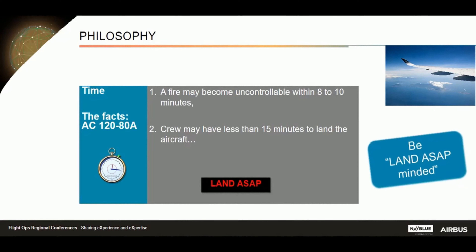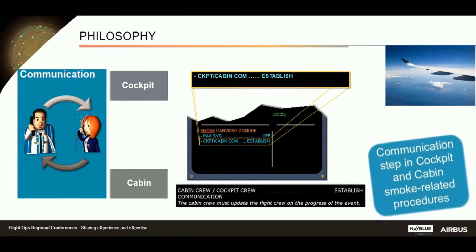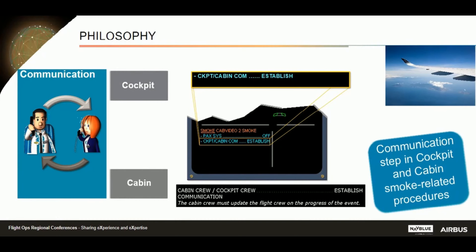Concerning time first: the statements from the FAA advisory circular are the conclusions of fire tests conducted by regulatory authorities during the industry working group, and they clearly show that time is key. That is why our smoke procedure requires a land-as-soon-as-possible mindset. Because the situation can escalate quite quickly, communication between the cockpit and the cabin is essential at the earliest stage of the event. That is why all cockpit and cabin crew smoke-related procedures include a step dedicated to communication.